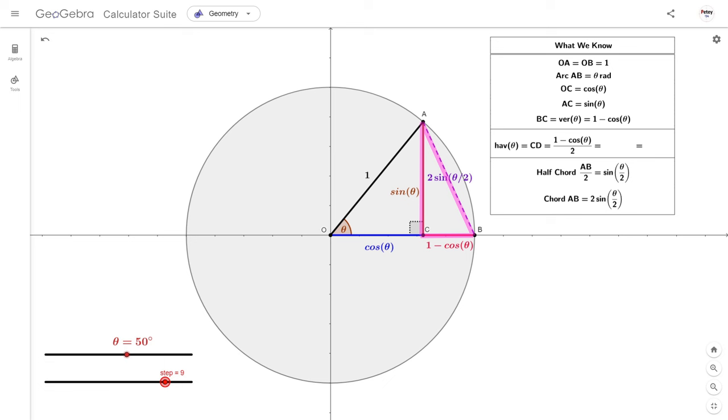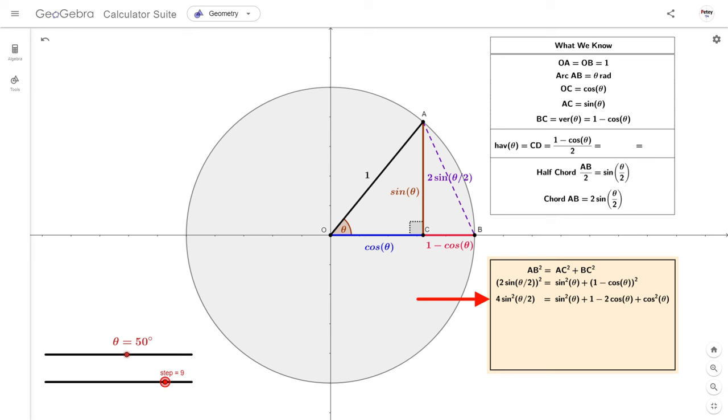We now have all the sides of triangle ABC, but let's see what we get when we plug these into the Pythagorean formula, AB squared equals AC squared plus BC squared. Squaring each side gives us this. That gives us these values. When added together, these will equal 1, so the equation becomes this.